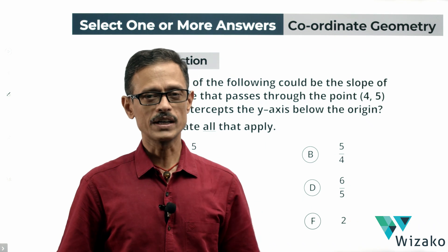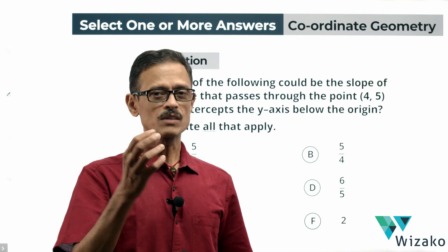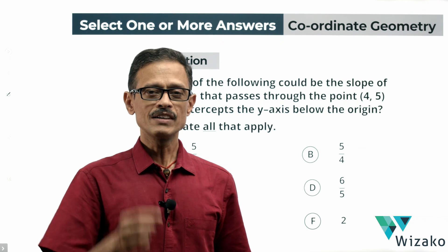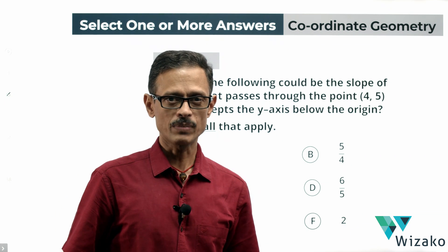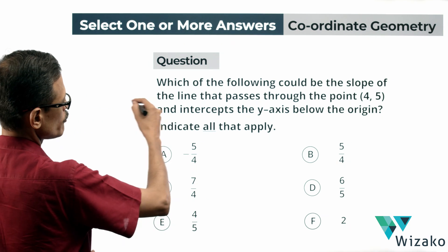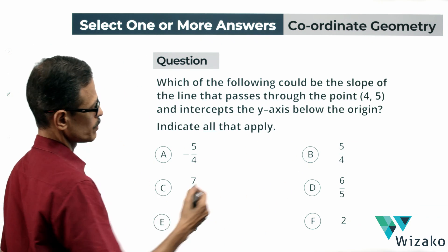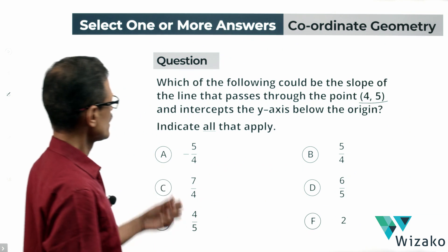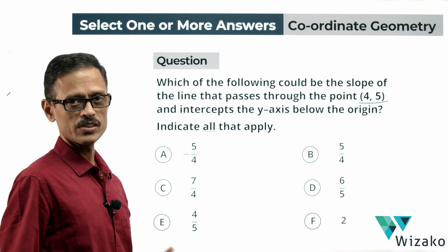This is a question from the topic coordinate geometry. The concept being tested is computing the slope of a line given coordinates of two points through which the line passes. It's a medium difficulty question. Which of the following could be the slope of the line that passes through a given point and intercepts the y-axis below the origin?